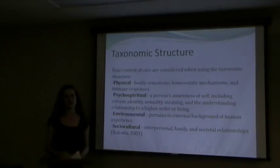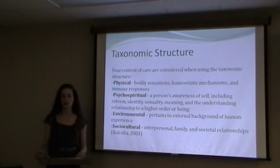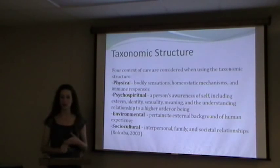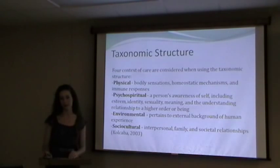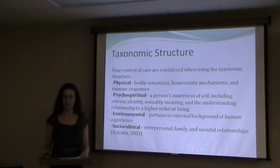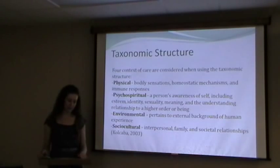The structure Kolkaba used in her theory is called a taxonomic structure, which includes four contexts of care to be considered when taking care of a patient. Physical includes body sensation, homeostatic mechanisms, and immune response. Psycho-spiritual can include awareness of self, self-esteem, identity, sexuality, meaning, and the relationship to a higher order of being. Environmental pertains to the external background of human experience, and sociocultural includes interpersonal, family, and societal relationships.